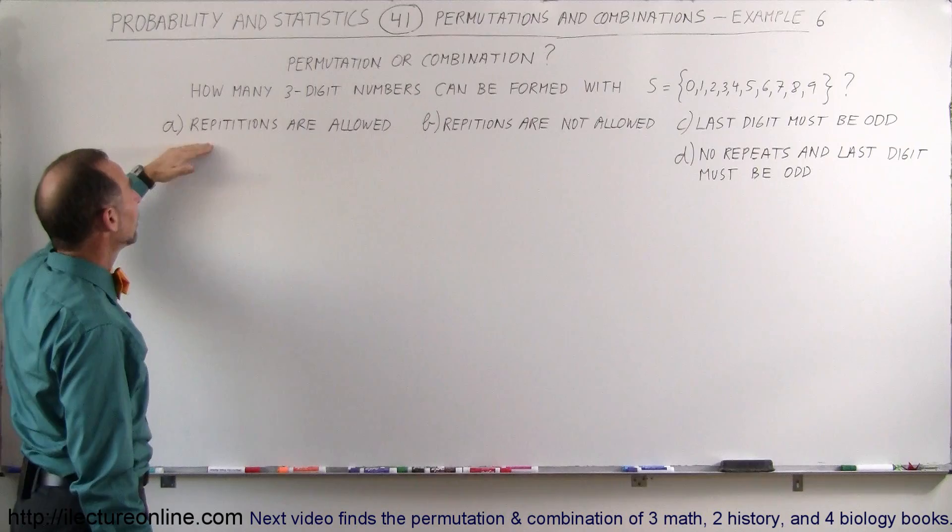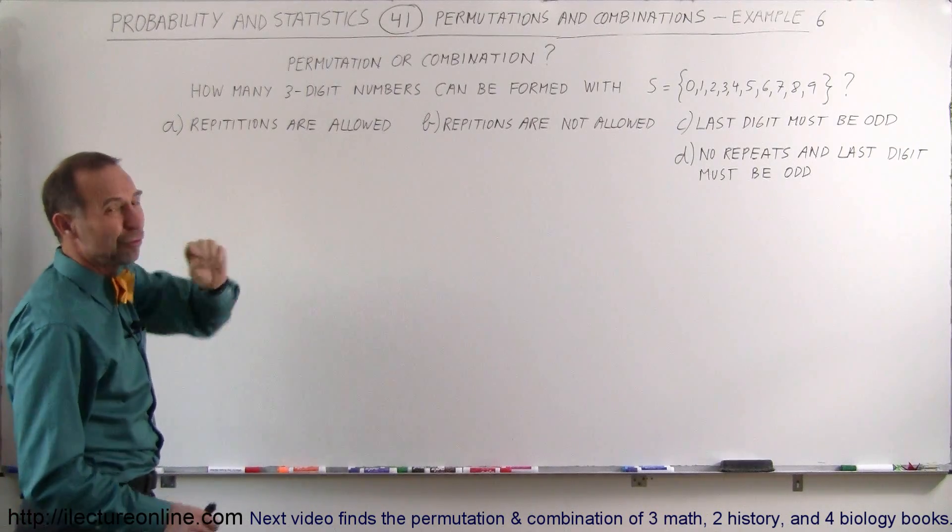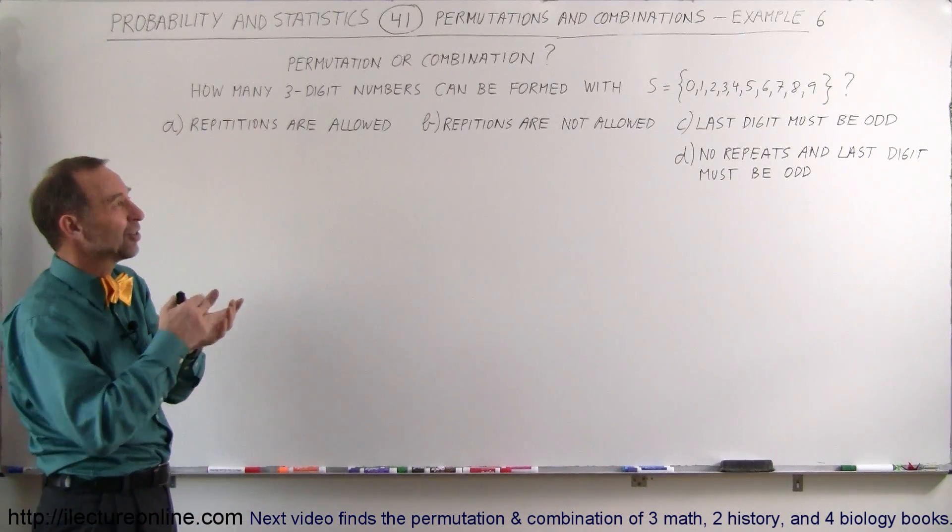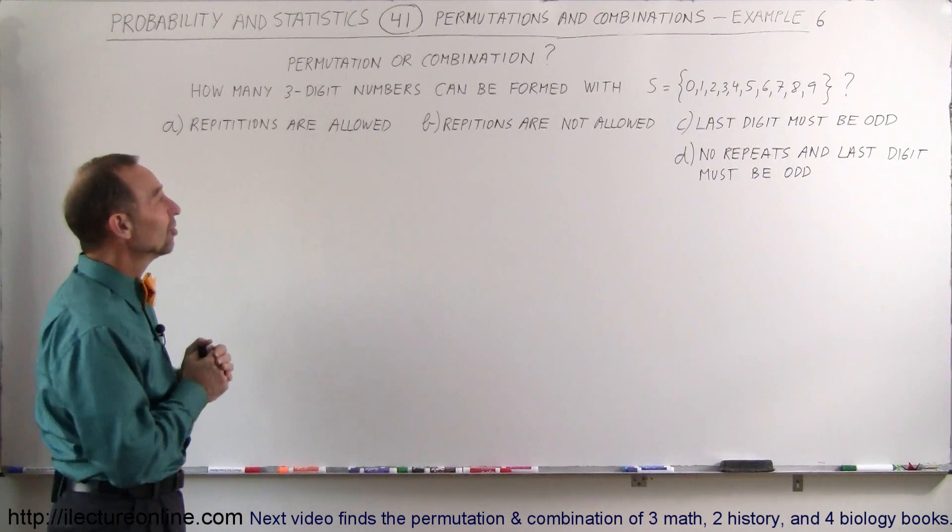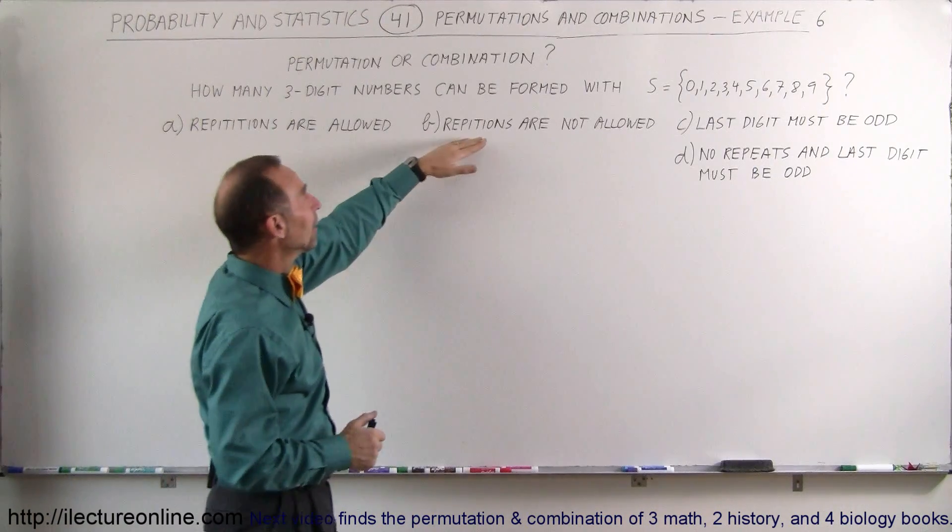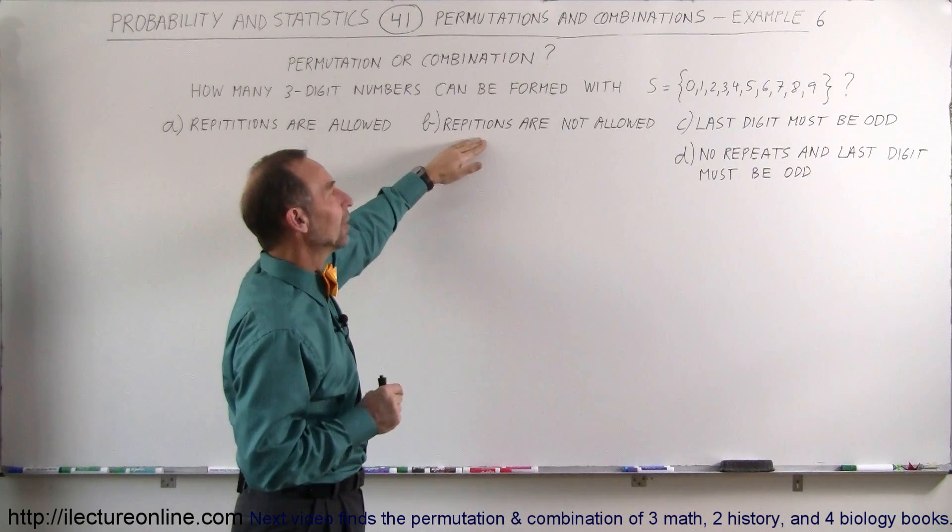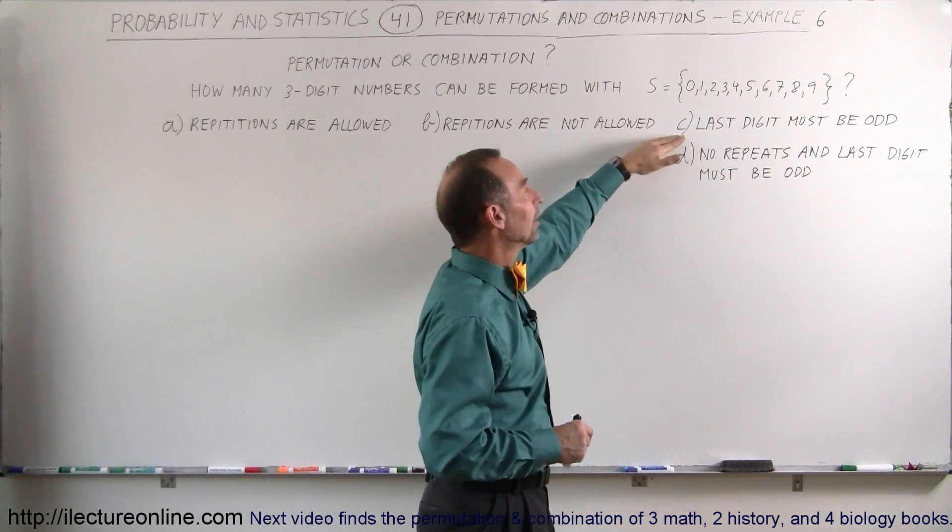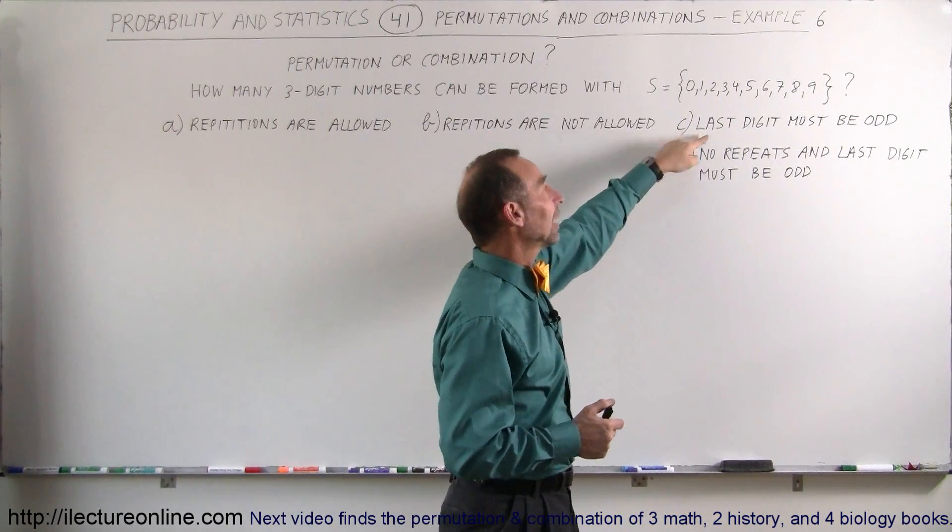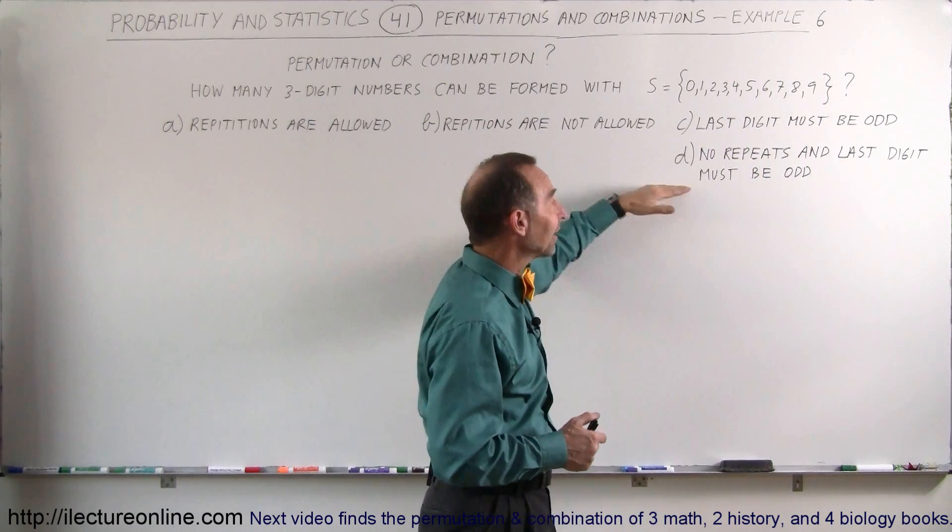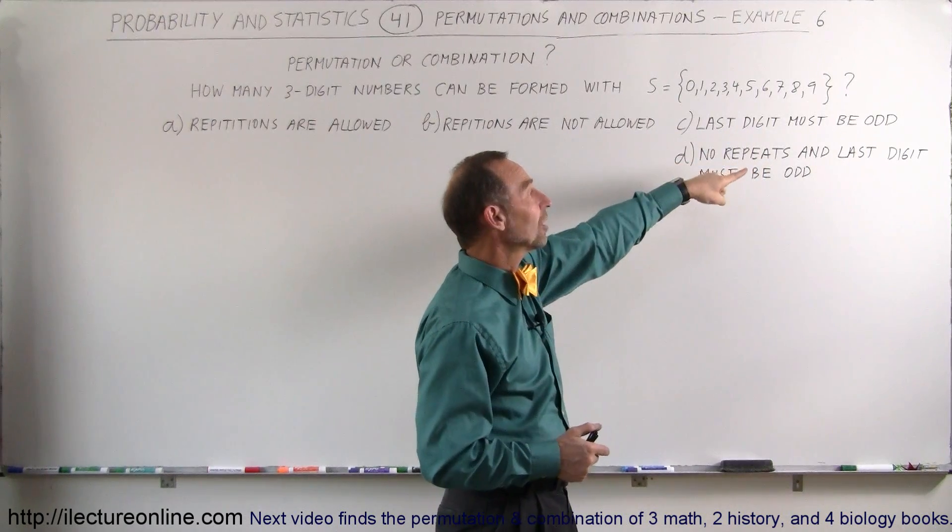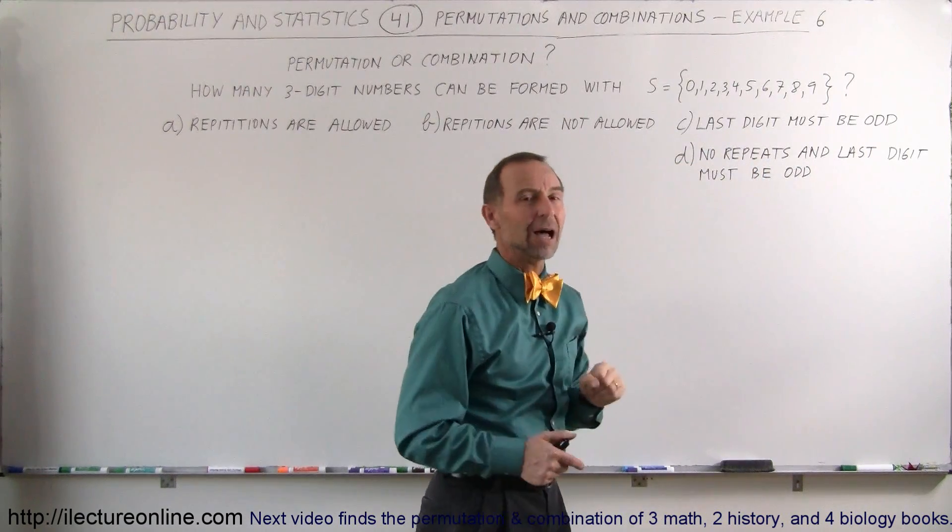For part A, repetitions are allowed but of course the first digit cannot be a zero because you can't have a zero starting on a three-digit number. On the second try, repetitions are not allowed so you can't use the same number twice. On the third one you can use the same number twice but the last digit must be an odd number, and finally there's no repetitions allowed and the last digit must be odd.